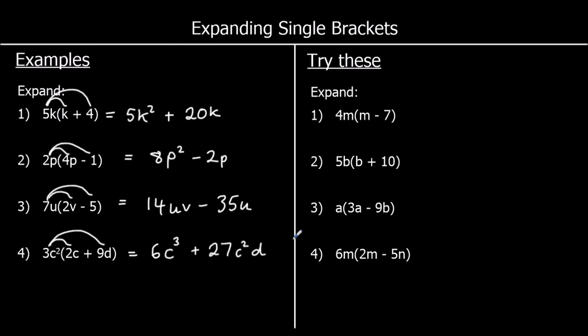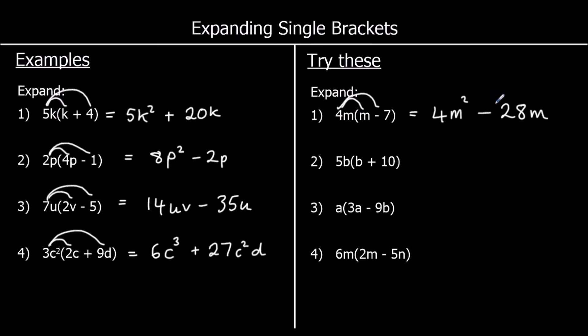Four more for you to try — pause the video and give them a go. The first one: 4m times m is 4m². Then we've got 4m times a negative 7, so it's going to be negative, and 7 fours are 28. So it's going to be 28m.